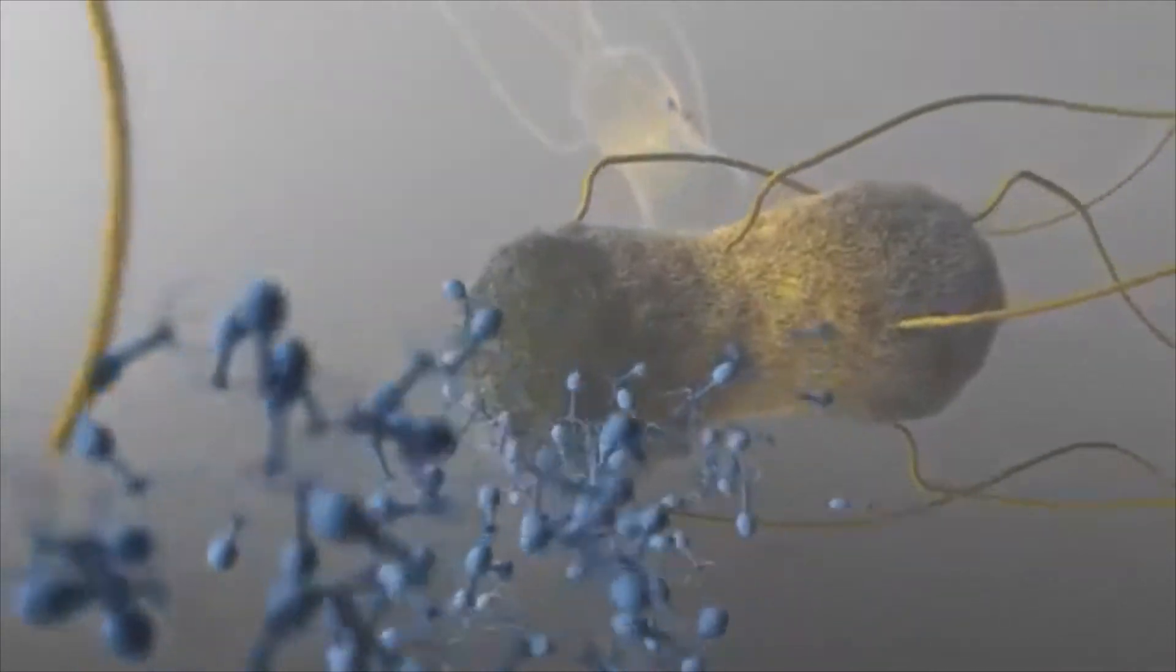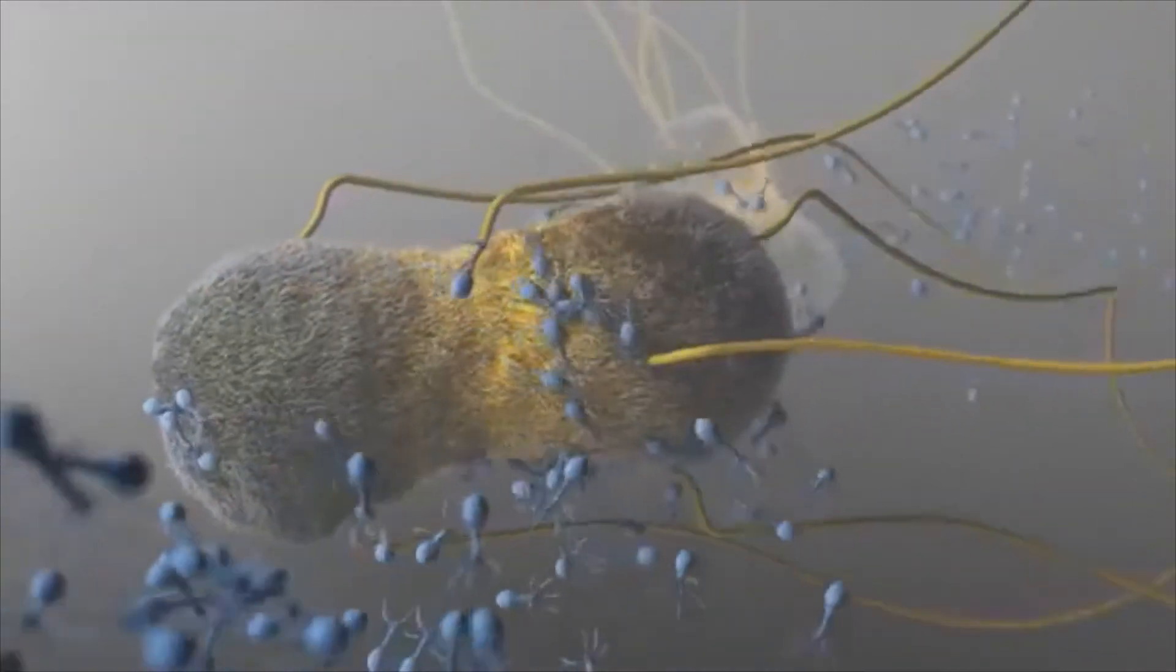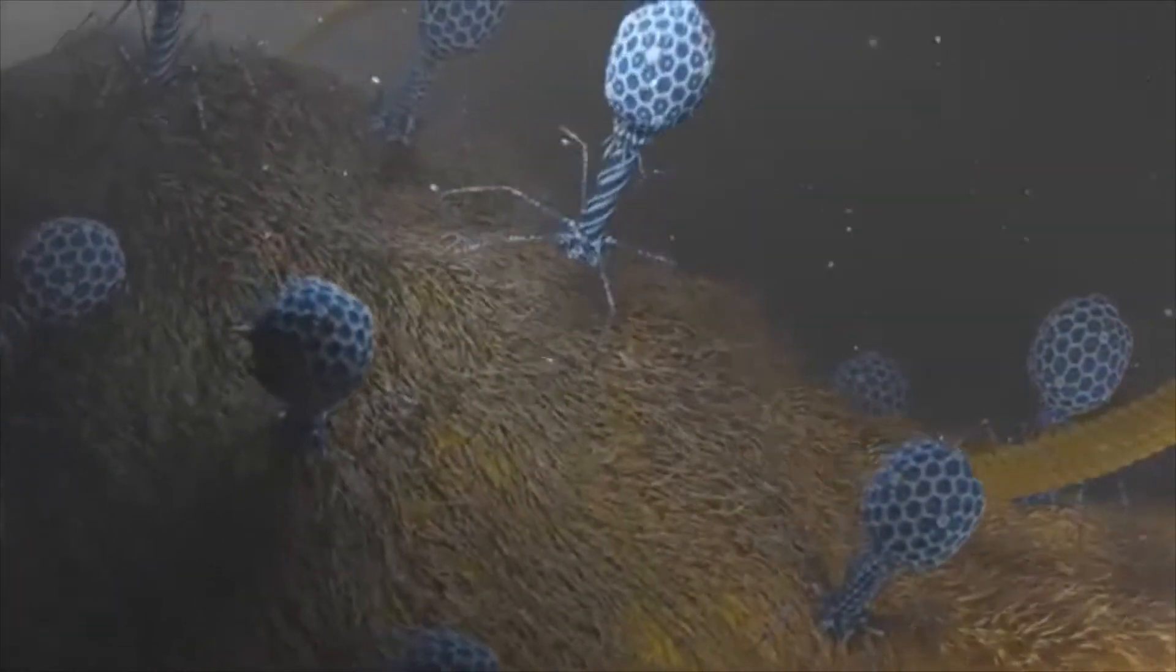But today we will be focusing on the lytic cycle. The lytic cycle is a process in which a virus invades a host cell in order to create more viral bodies to infect even more cells. There are five stages that make up this cycle.